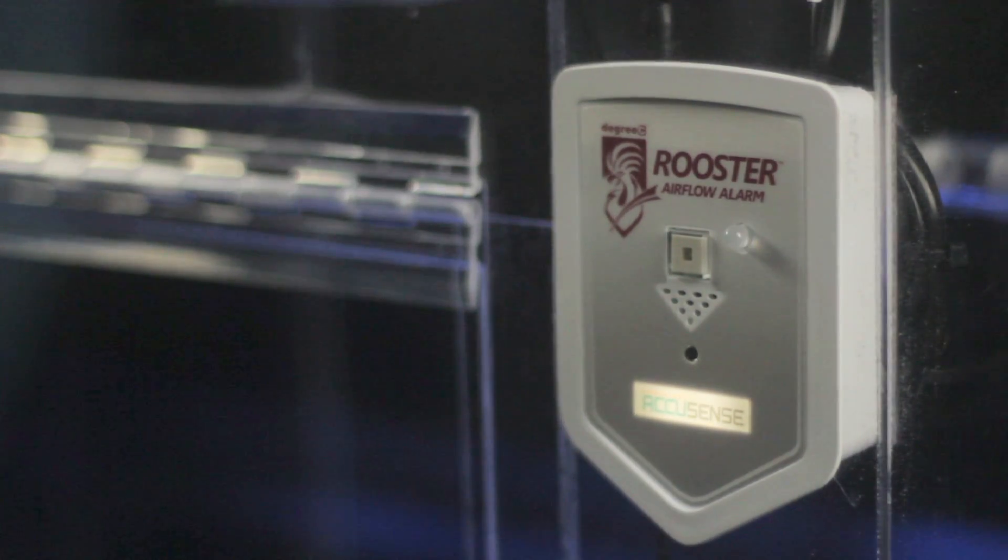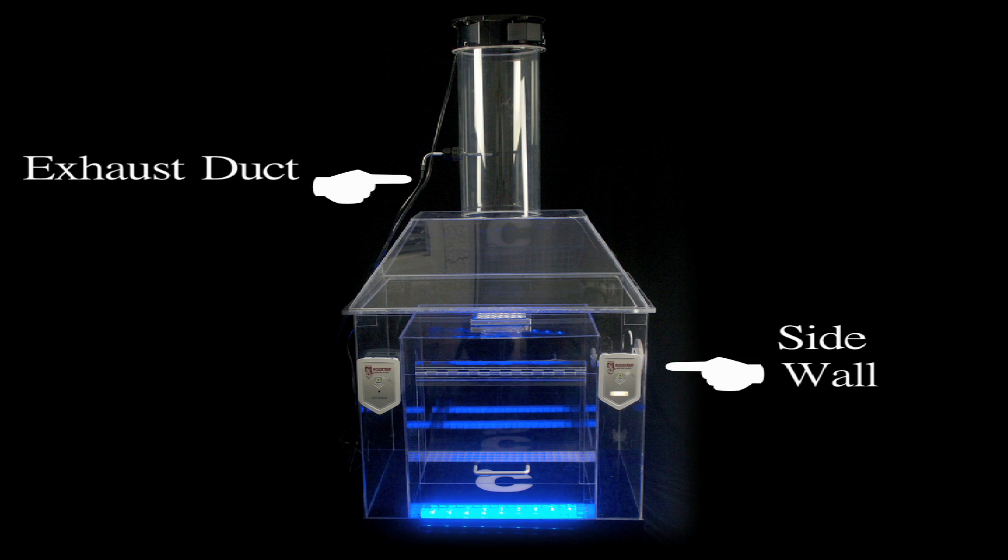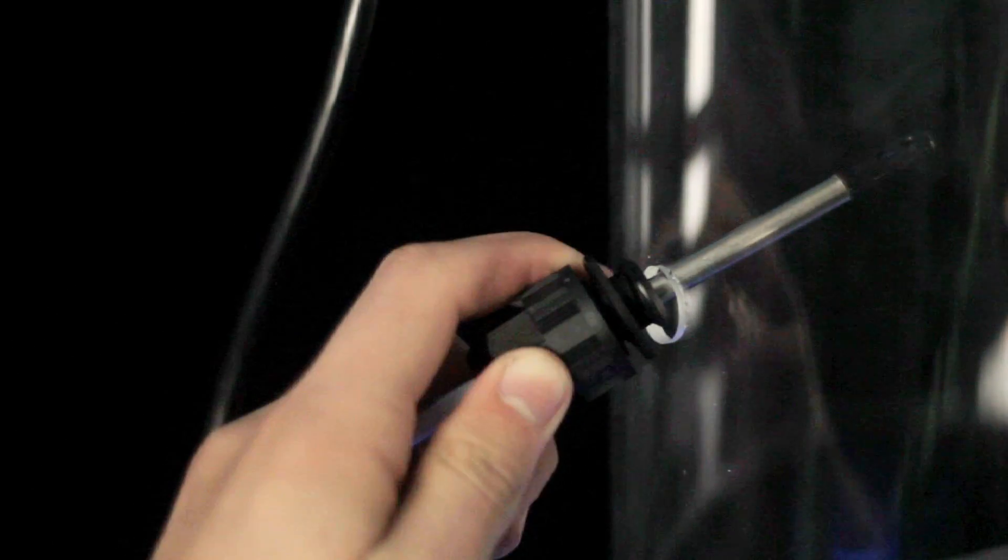Installation is an easy process. There are two typical places for the sensor: in the exhaust duct, in the sidewall, or front mounting face of the biosafety cabinet. For a duct, it is as simple as drilling a hole, inserting the probe sensor so the airflow passes directly through the sensor, and then tightening the gland nut mounting.